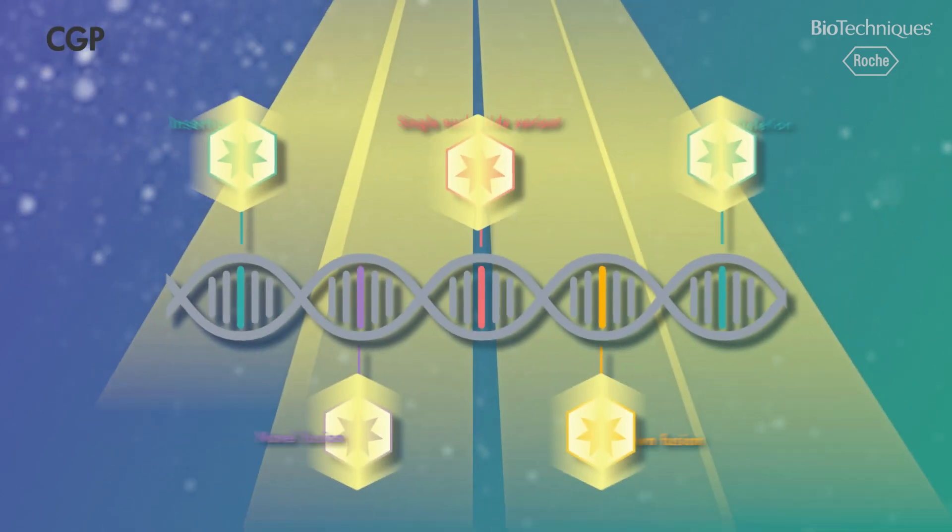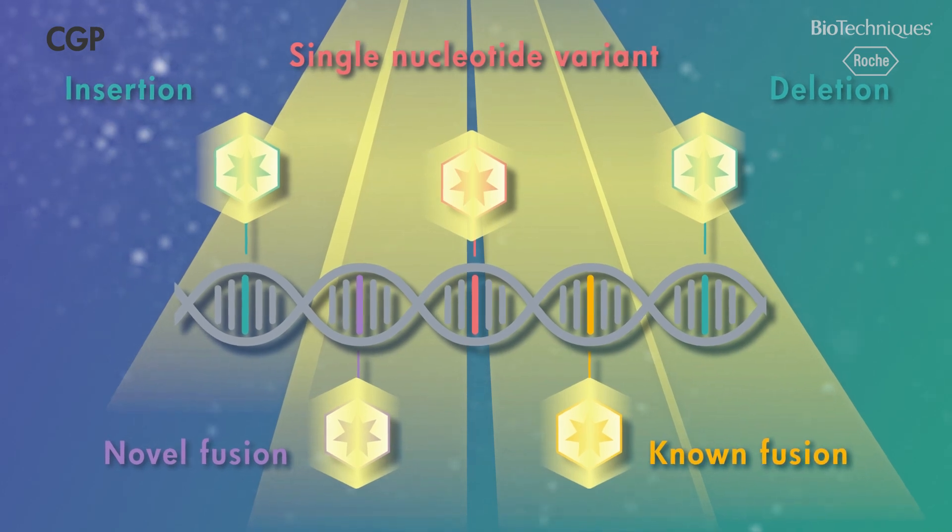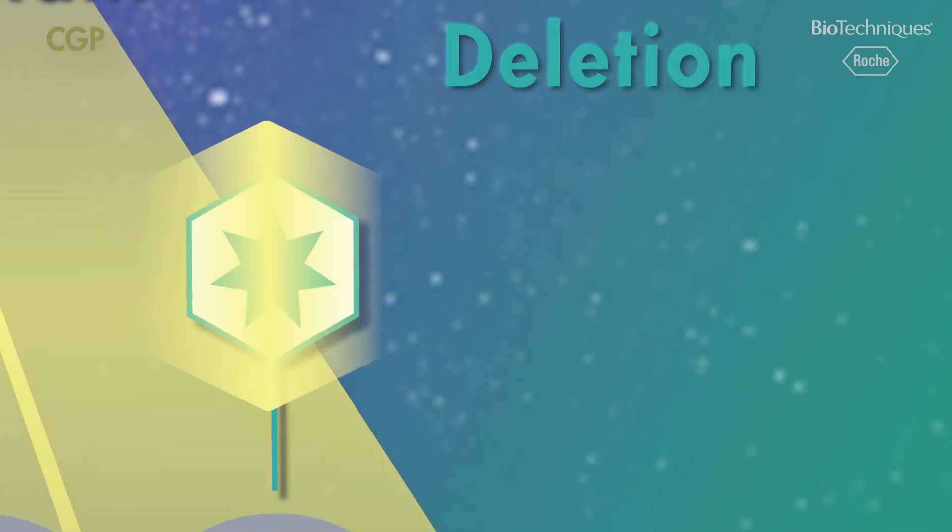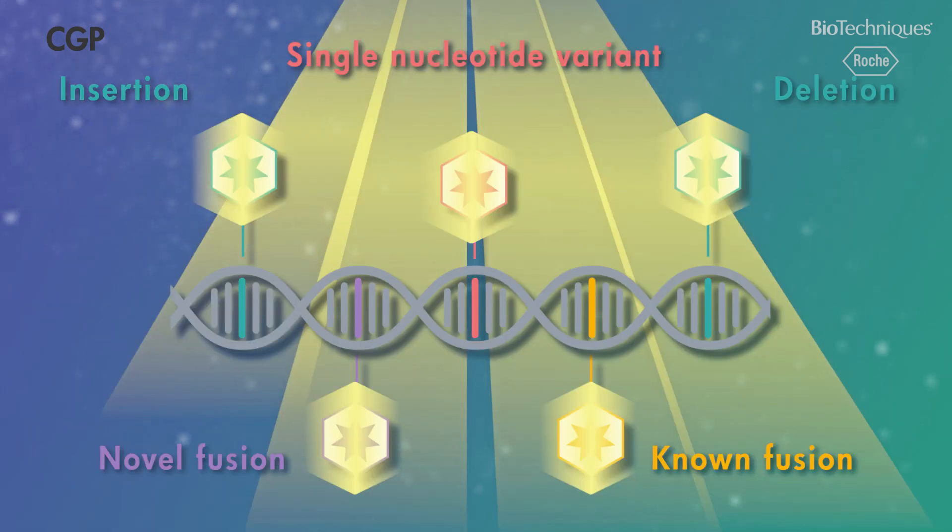Comprehensive genomic profiling enables clinical labs to reveal the unique genomic profile of a patient's tumor by simultaneously analyzing hundreds of cancer-associated genes for four key mutation classes: copy number alterations, indels, fusions, and single nucleotide variants, all in a single assay.